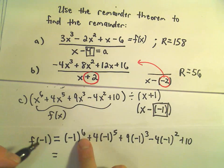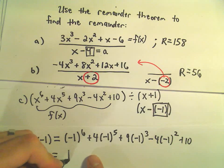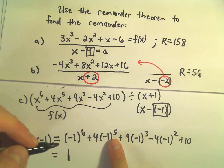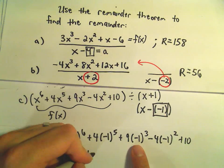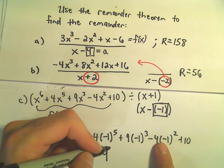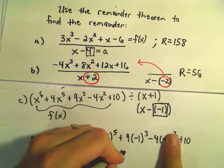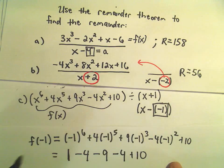If you take negative 1 to an even power, it's positive 1. If you raise it to an odd power, it's negative 1. So we'll get -4 here minus 9. This will turn into positive 1 times -4, which is -4 plus 10.